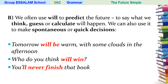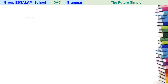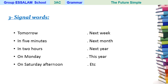Now let's look at the signal words, or time indicators, of the future simple tense. We have: tomorrow, in five minutes, in two hours, on Monday, on Saturday afternoon, next week, next month, next year, this year, and so on.